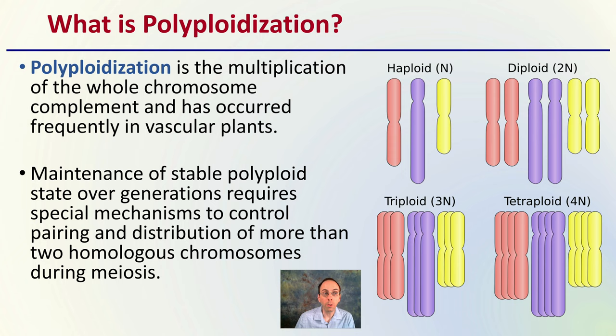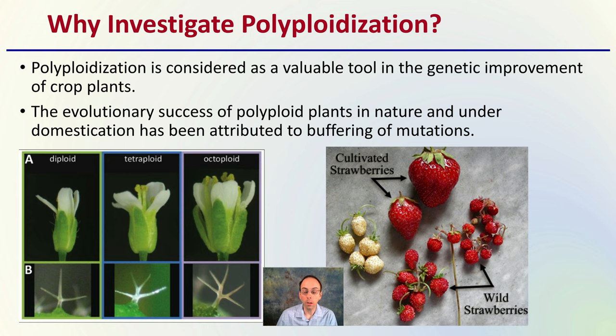We'll get to see how this actually changes the cannabis plant's morphology. Why investigate this in the first place? What's the justification? Polyploidization is considered a valuable tool in the genetic improvement of crop plants. The evolutionary success of polyploid plants in nature and under domestication has been attributed to the buffering of mutations. This is most evident comparing wild strawberries to cultivated strawberries — everyone wants larger, bigger fruits, and this is one way potentially through genetics and ploidy levels to accomplish that.